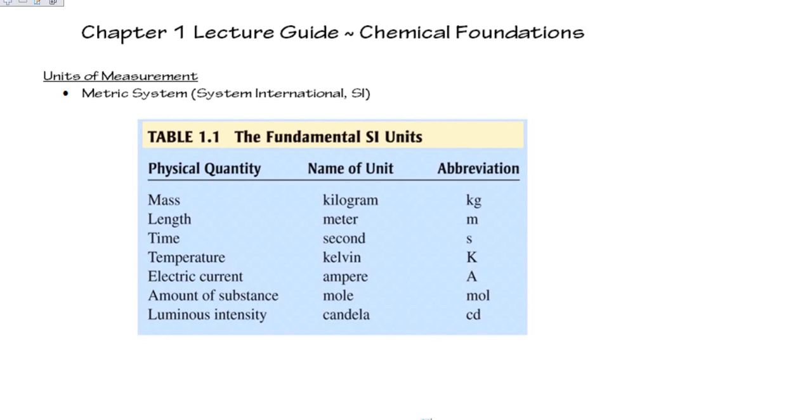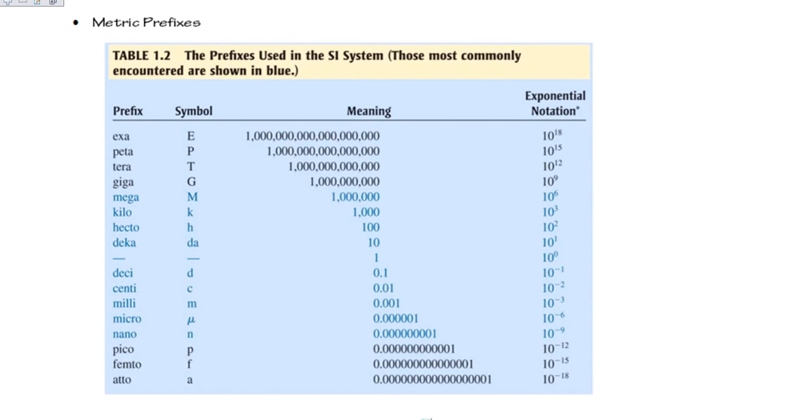At some point we'll be using most of these units in this first chart. In the second chart we should be familiar with some of these metric prefixes, specifically kilo through milli. These are ones that should be quick recall for you. I would know the order of these metric prefixes. Other ones we can look up. If I see pico from time to time, I can look it up.